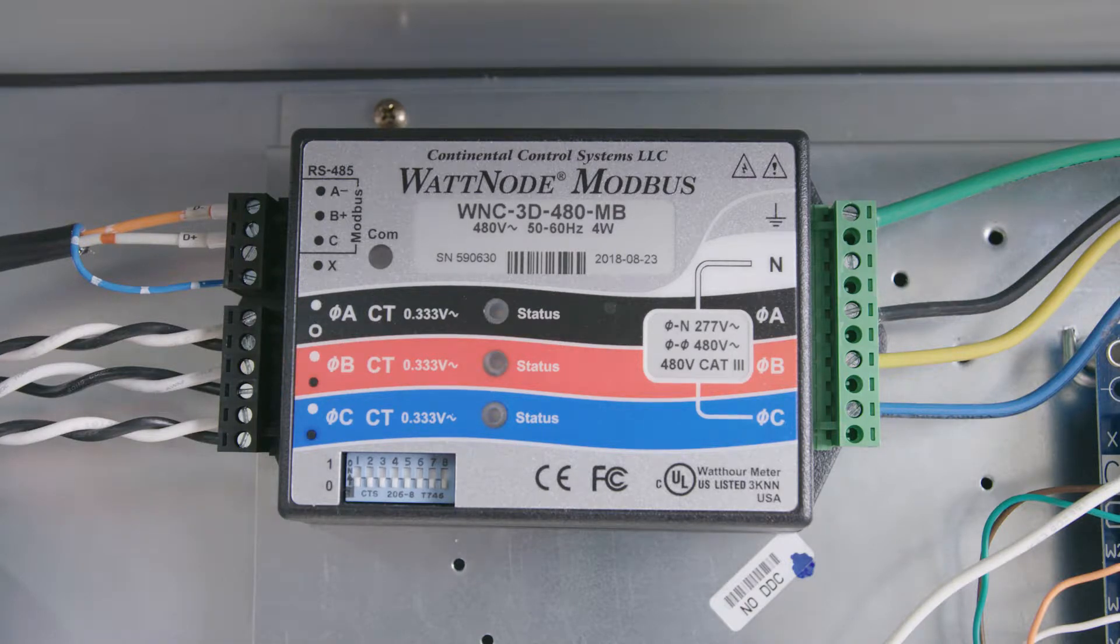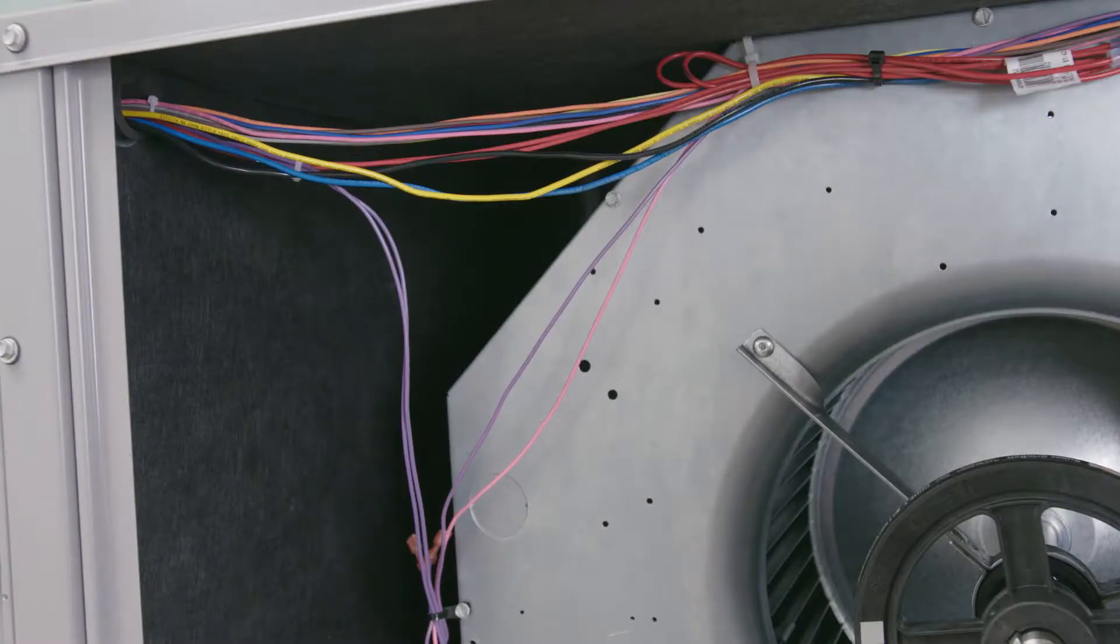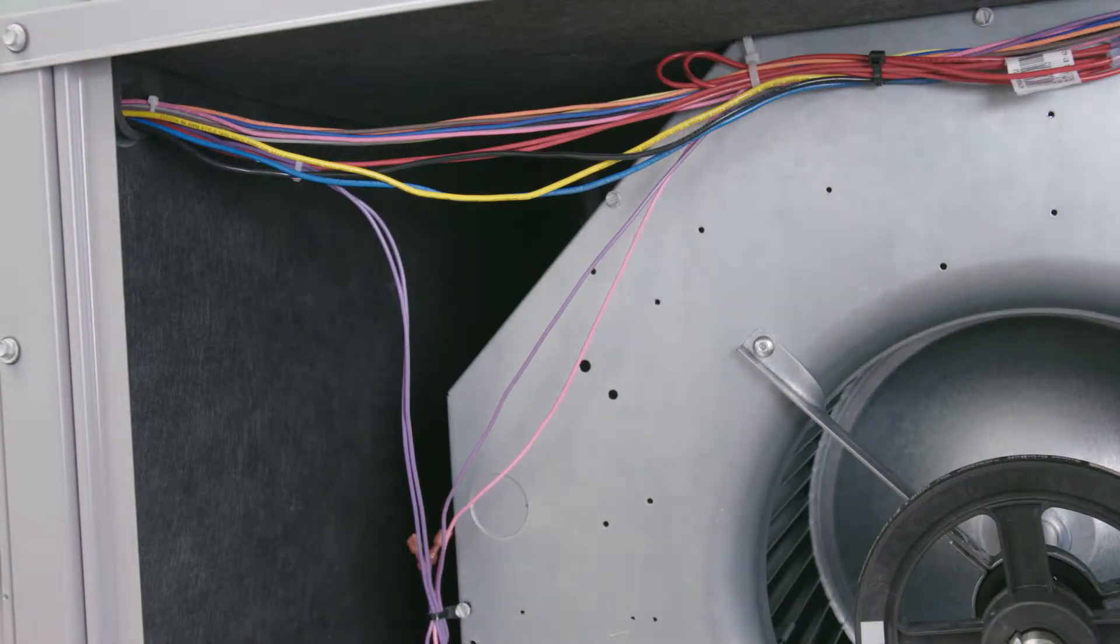Also, make sure that when you terminate the wires, you have white on top of black for each set of CTs, and so on. White on top, black on bottom.